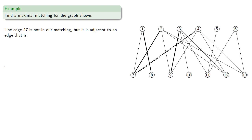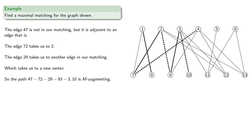The edge 4-7 is not in our matching, but it is adjacent to an edge that is. So again, this might be the start of an M-augmented path. The edge 7-2 takes us to 2. The edge 2-9, again to the lowest number, takes us to another edge in our matching, which takes us to a new vertex. And so 4-7, 7-2, 2-9, 9-3, 3-10 is M-augmenting. We swap the edges out and get a larger matching set.